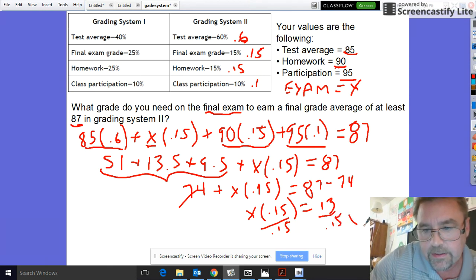Divide both sides by 0.15 to get the variable alone, and X should equal 86.7.